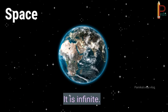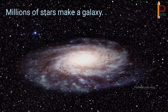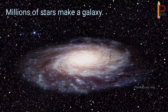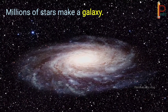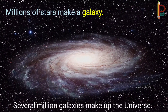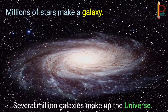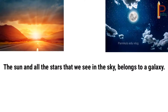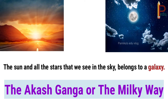Space is infinite, means it is endless. Millions of stars make a galaxy. Several million galaxies make up the universe. The sun and all the stars that we see in the sky belong to a galaxy. This galaxy is called the Akash Ganga or the Milky Way.